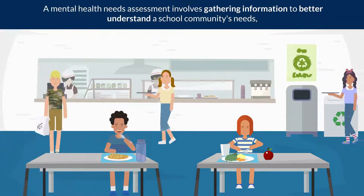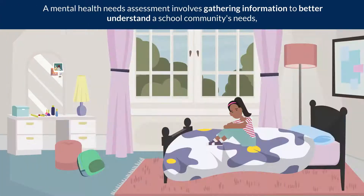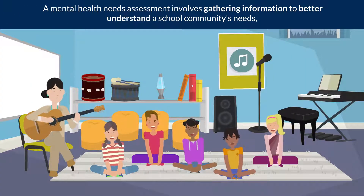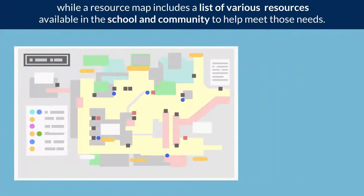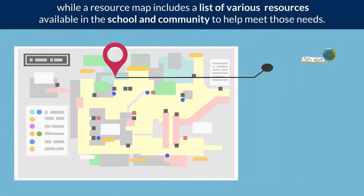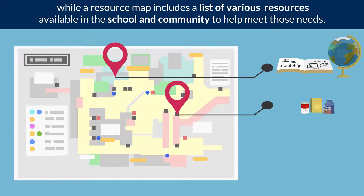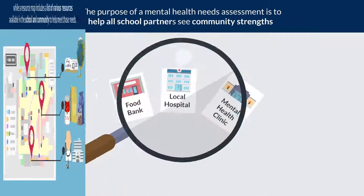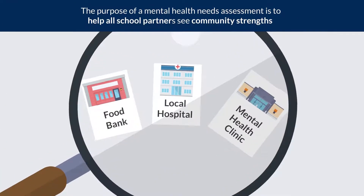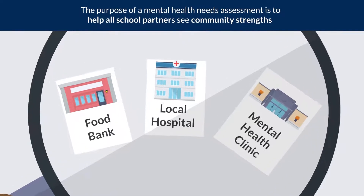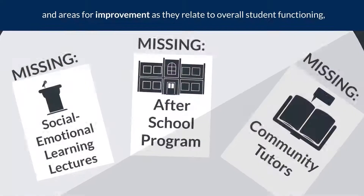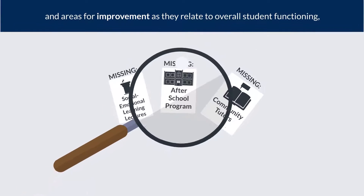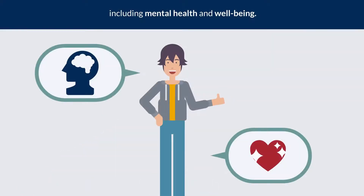A mental health needs assessment involves gathering information to better understand a school community's needs, while a resource map includes a list of various resources available in the school and community to help meet those needs. The purpose of a mental health needs assessment is to help all school partners see community strengths and areas for improvement as they relate to overall school functioning including mental health and well-being.